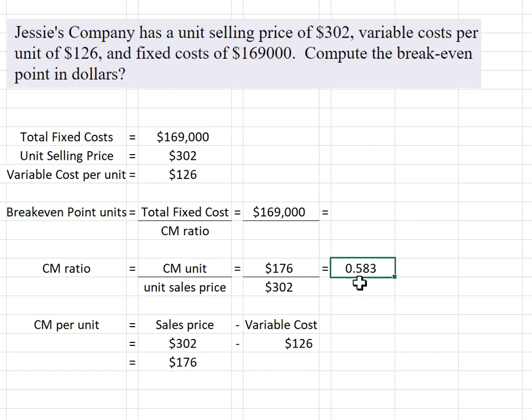That is the equivalent of 58.3% contribution margin ratio. Remember when you convert to a percentage, you always move the decimal place two spaces to the right. So that is the equivalent of 58.3%.